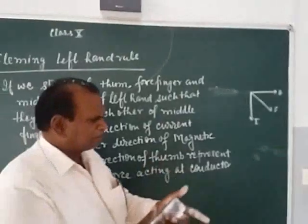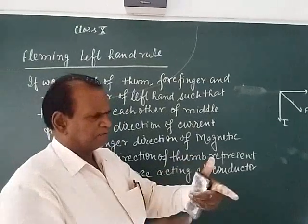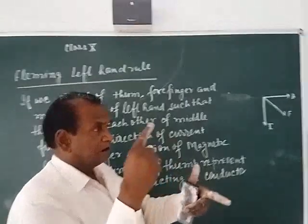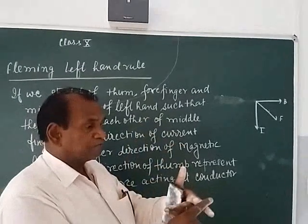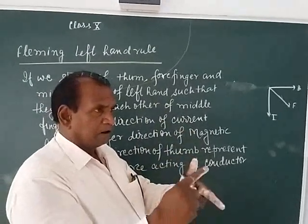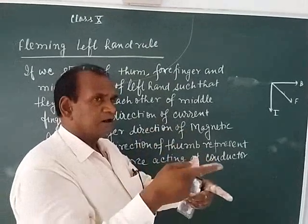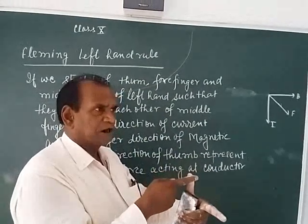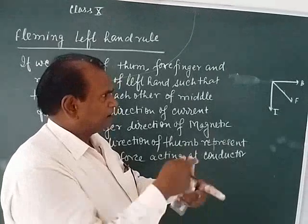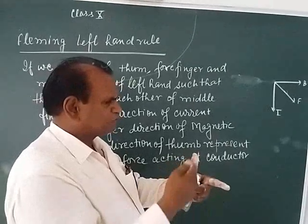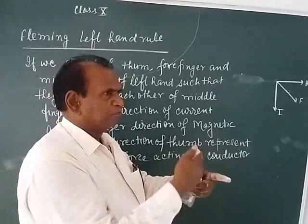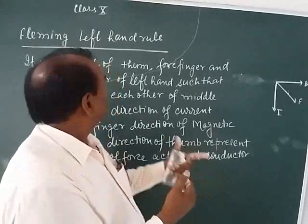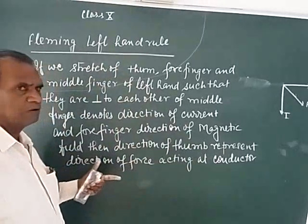Remembering: I, B, F — I for current, middle finger; B for magnetic field, forefinger; F for force, thumb. I, B, F — it should be remembered by you for learning Fleming's left hand rule.